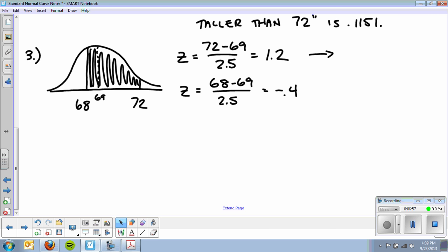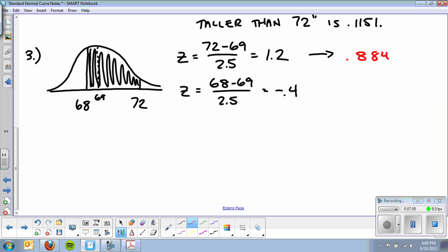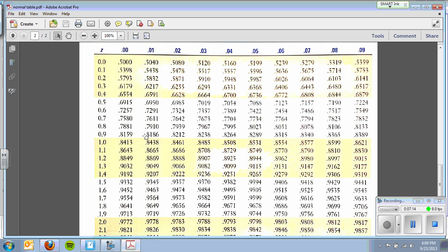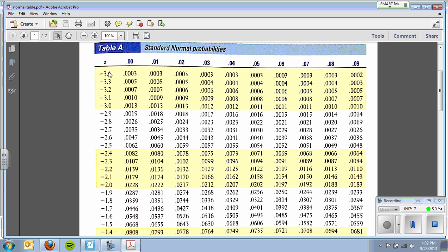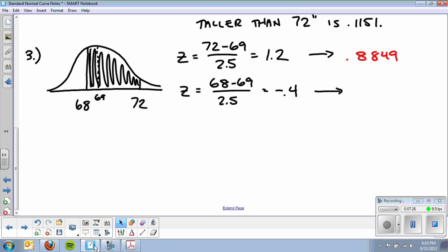And basically I'm going to look both of those up in the table and subtract. So for 1.2, I get that area of 0.8849. And for z-score of negative 0.4, when I look that up I go to my negative side, again I'm going to scan down and find negative 0.4 right here, 0.3446. And I'm basically going to subtract those two areas. Any time I'm going between, I look them both up and subtract. So the probability that z is greater than negative 0.4 but less than 1.2, the subtraction of those two, 0.8849 minus 0.3446, and I get 0.5403.